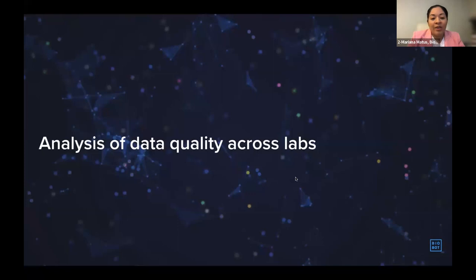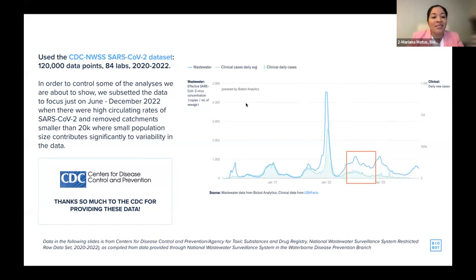To answer questions about data quality across the industry, we have a nice natural experiment: CDC NWSS collects data from 84 different labs in the U.S. and has been collecting this data for close to two years. This dataset is available upon request. We requested access to the CDC NWSS dataset, and we want to thank CDC NWSS for allowing us to do the analysis and for giving permission to present those results here. We selected the time period June to December 2022, when there were high levels of SARS-CoV-2 in the U.S. population.